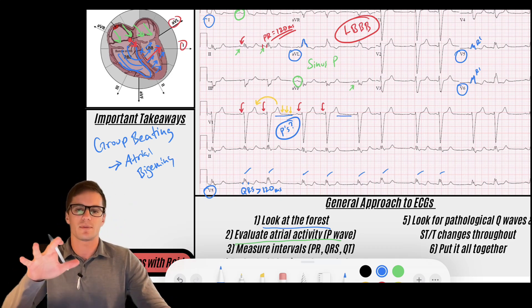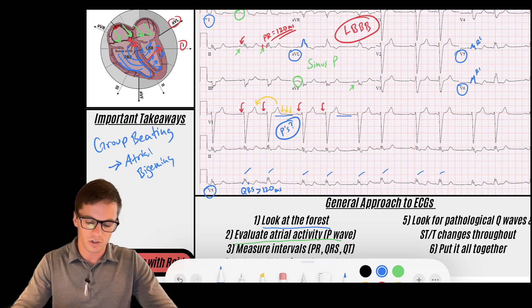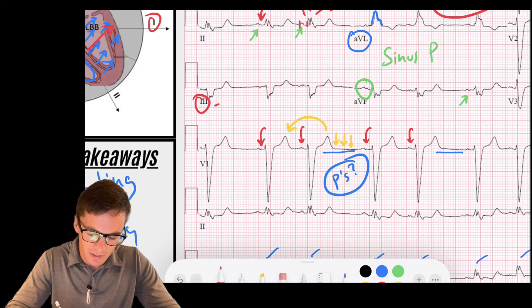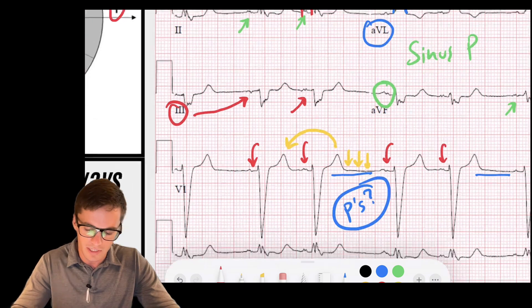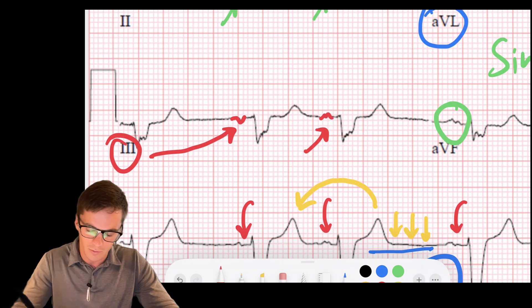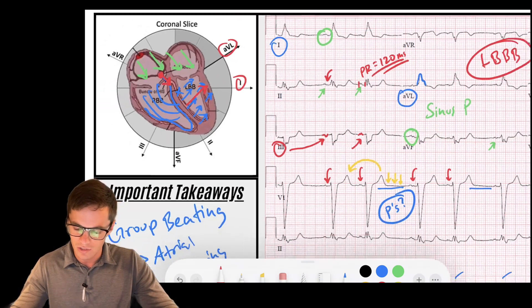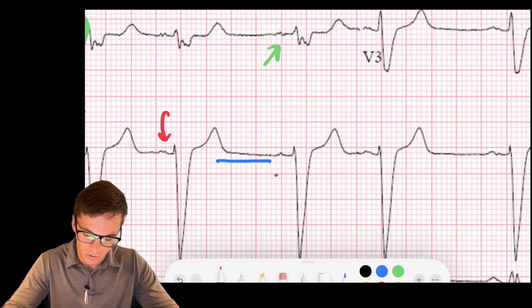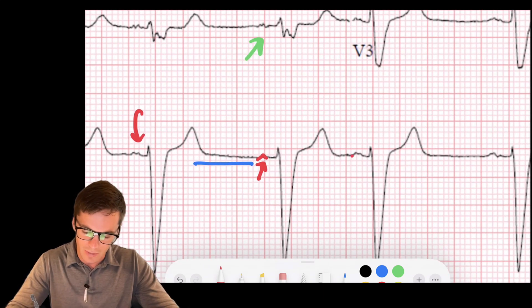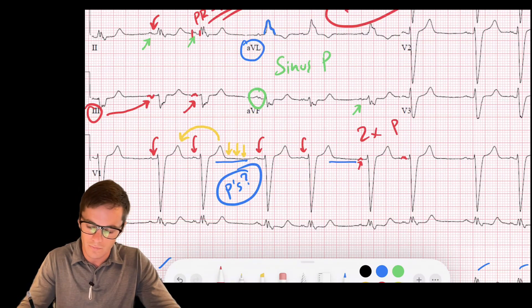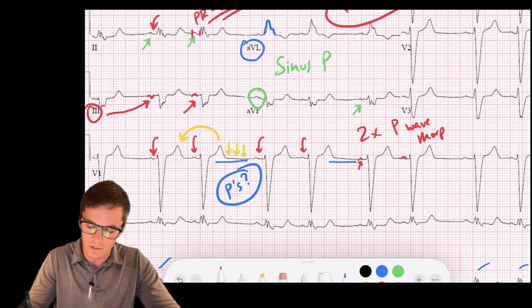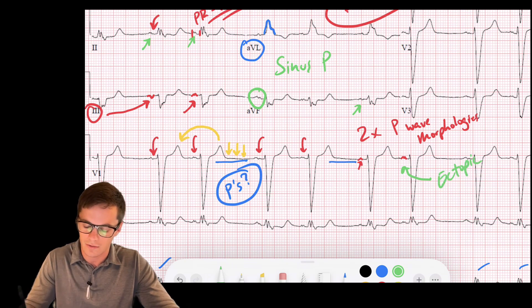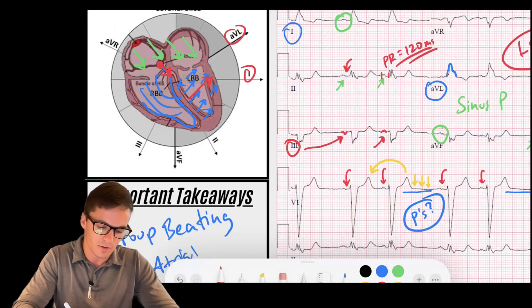Atrial bigeminy means that there's a premature atrial contraction that happens after every other beat. I look closely at my P wave morphologies, maybe I look up here in lead three. You notice that my first P wave looks like so and the next P wave looks a little bit different. This P wave is a negative deflecting P wave, this one kind of has an upward deflecting P wave, so those are certainly two different morphologies. Let's look at maybe lead V1 right here. You can notice it's very subtle but you have this small spiky P wave and then you kind of have this bifid P wave. So this tells me that there are two P wave morphologies - they're very similar but I would say that this one is likely ectopic.